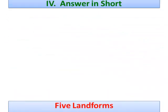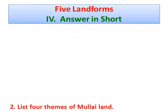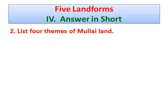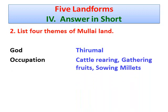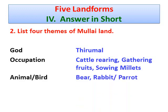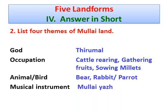Question number two: List four themes of Mullai land. Answer: God - Thirumal; Occupation - Cattle Rearing and Gathering Fruits; Animal or Bird - Bear, Rabbit, Parrot; Musical Instrument - Mullai Yal.